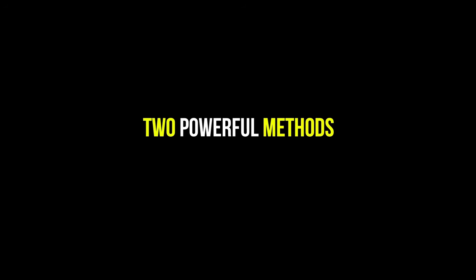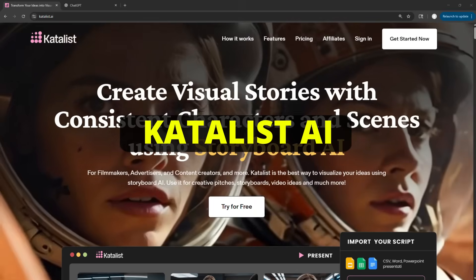Now that we have our base image, it's time to turn it into a full cinematic sequence with new angles, dramatic shots, and visual variations. I'll show you two powerful methods: first, how to turn a single image into an entire cinematic sequence, and second, how to generate a complete AI film starting from just one idea. Let's begin with the hands-on method and start building that cinematic sequence. To do that, we will be using a tool called Catalyst AI.